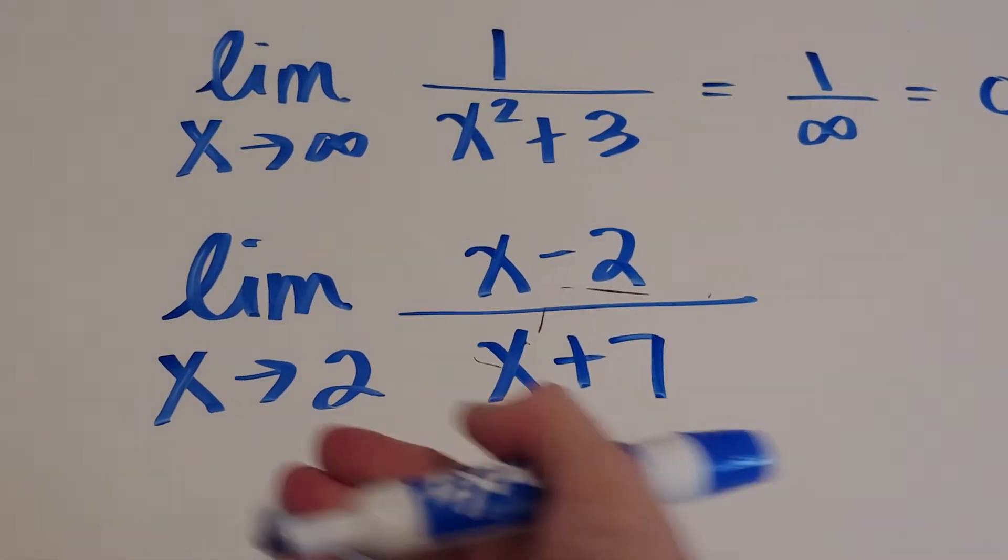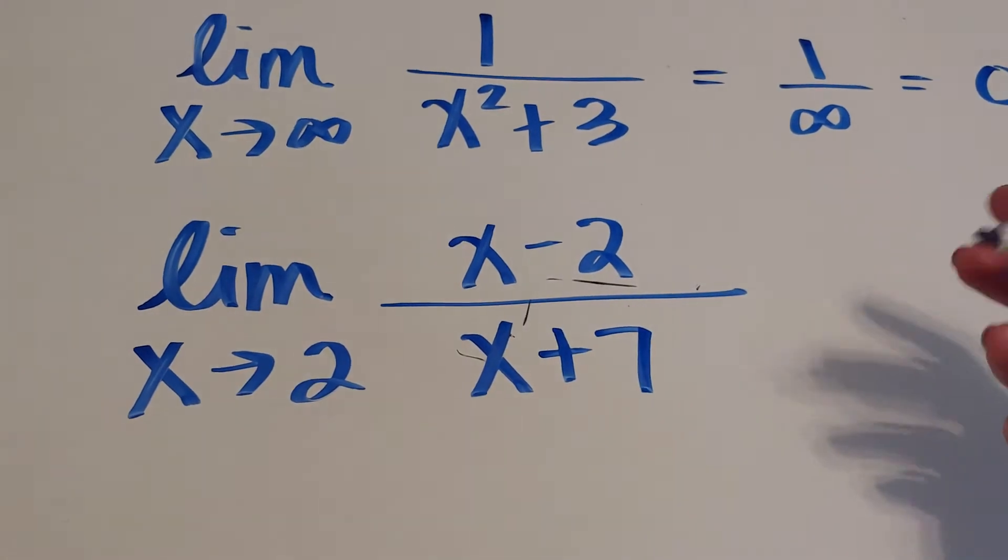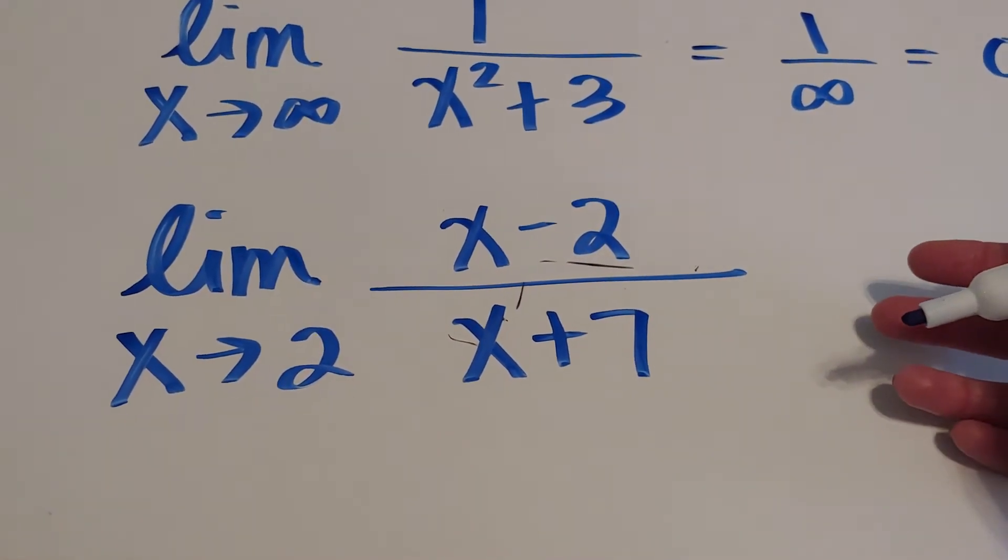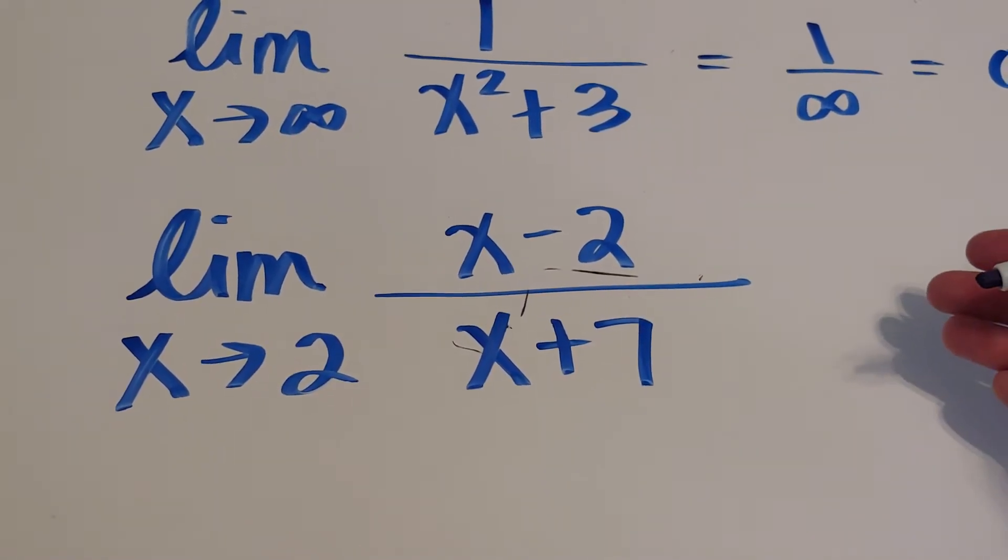So if I give you this limit and you plug in 2, you're going to get 0 over 7. Zero over 7 is 0. This is not a 0 over 0 case.